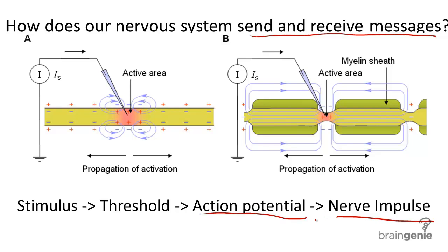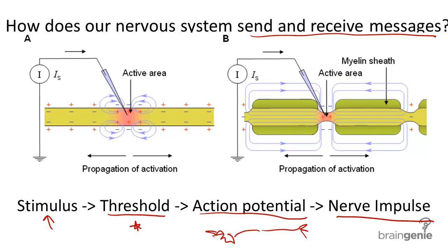Every action potential or nerve impulse requires a threshold to be reached. If an initial stimulus is strong enough — for example, if it reaches the threshold — it travels along the length of a nerve cell and transmits the message to other nerve cells. If it is not strong enough, or it does not reach the threshold, nothing happens.